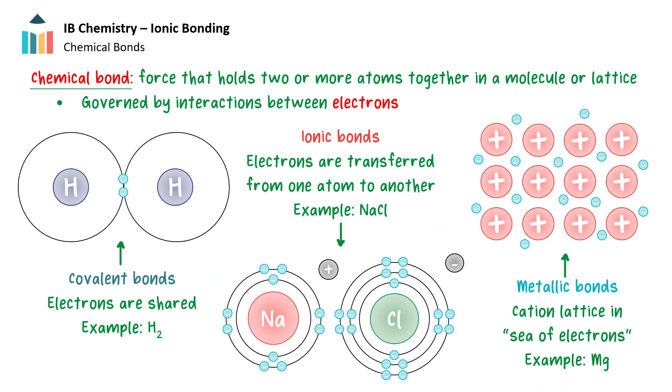A chemical bond is a force that holds two or more atoms together in a molecule or lattice. It is formed by the interaction between the electrons of the atoms involved in the bond. The electrons can be shared or transferred between the atoms, resulting in the formation of a compound.